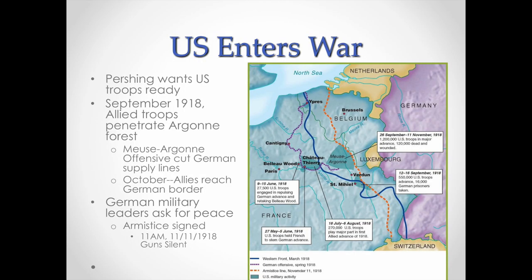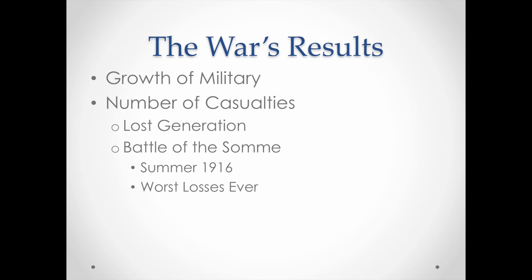In 1918, the United States entered the war, and U.S. General John J. Pershing spent much of the year trying to get troops ready. In September of 1918, they moved into the Argonne Forest in the Meuse-Argonne Offensive, and military leaders in Germany began asking for a peace. On the 11th hour of the 11th day of the 11th month of 1918, the guns went silent and the war was over.